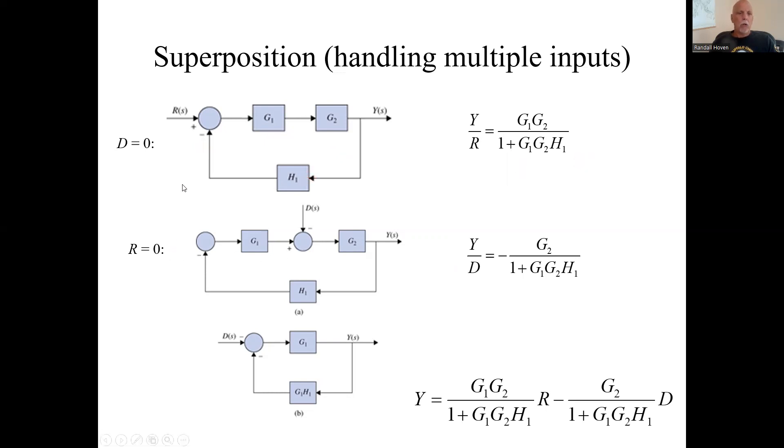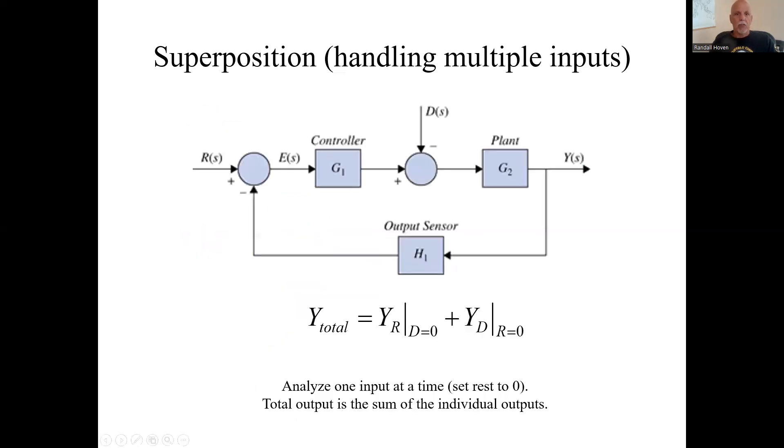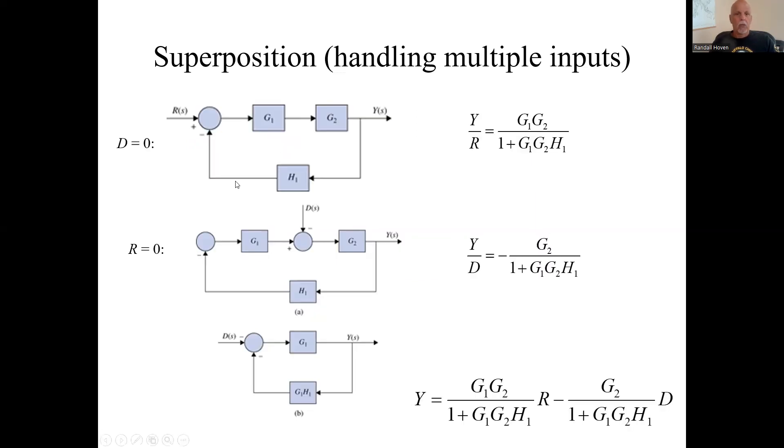Now for the second one, D is not set to zero but this input is. This little diagram here is just this guy with no R going into it. We could rewrite this block diagram this way with D more clearly the input.